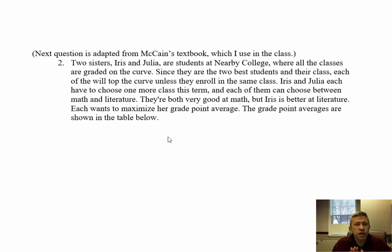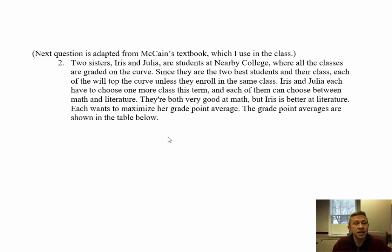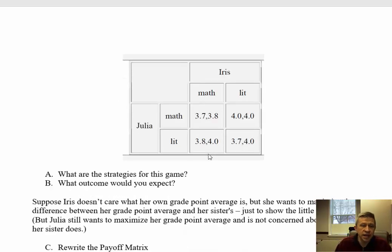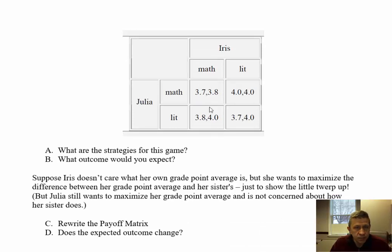The second game is adapted from McCain's game theory textbook. Two sisters, Iris and Julia, are students at nearby colleges. All classes are graded on a curve. They are the two best students and each will top the curve unless they enroll in the same class. Each must choose one final class — math or lit. Both are good at math; Iris is better at literature. Each wants to maximize her GPA, and the GPAs are shown in the table. The strategies are: for Julia, choose math or lit; for Iris, choose math or lit.